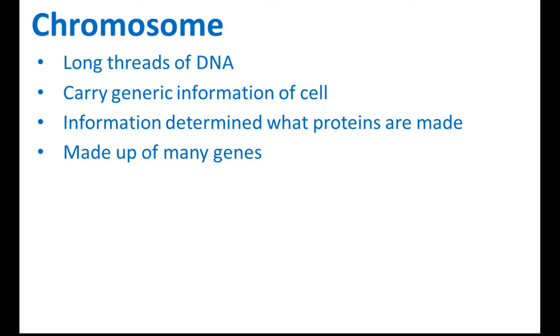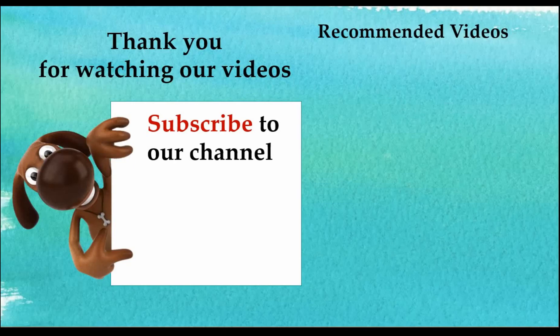And then, what is chromosome? Chromosome is a long thread of DNA. Remember, DNA carries the information of the characteristics of an organism. It carries genetic information of the cell, and this information will determine what proteins are made during cell divisions. This determines the characteristics of an organism. And this chromosome is made up of many genes. A lot of genes join together and form the chromosome.